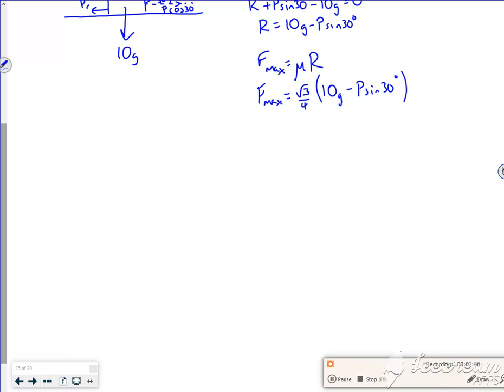If I expand the brackets, I get my F max as, what have we got here? So 5g root 3 over 2 minus sin 30 is a half. So root 3 over 8, lots of P. So it's in terms of P, but don't worry about it, that's okay.